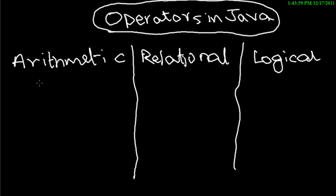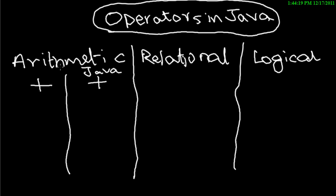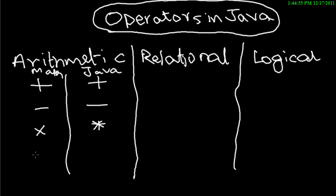Let's subdivide arithmetic operators into the real mathematical symbol and the Java symbol. For addition, the math symbol is plus and the Java symbol is also plus. For subtraction, both are minus. For multiplication, in math it's an 'x', but in Java it's an asterisk — that's the star symbol on your keyboard above the 8 key, accessed with Shift+8.